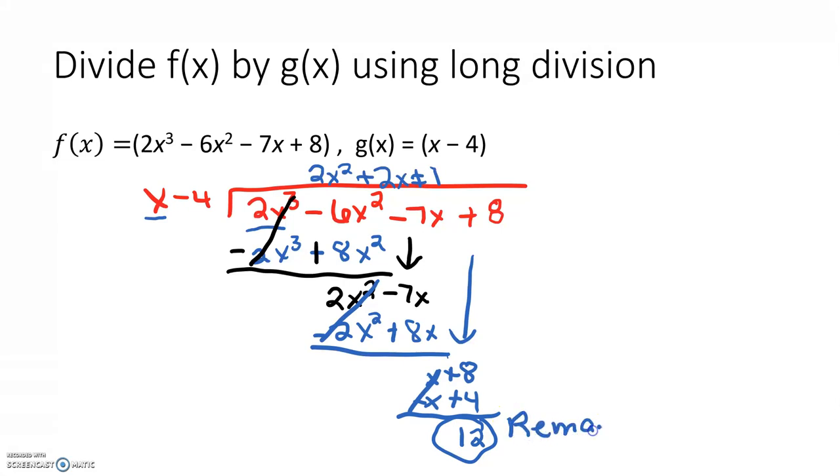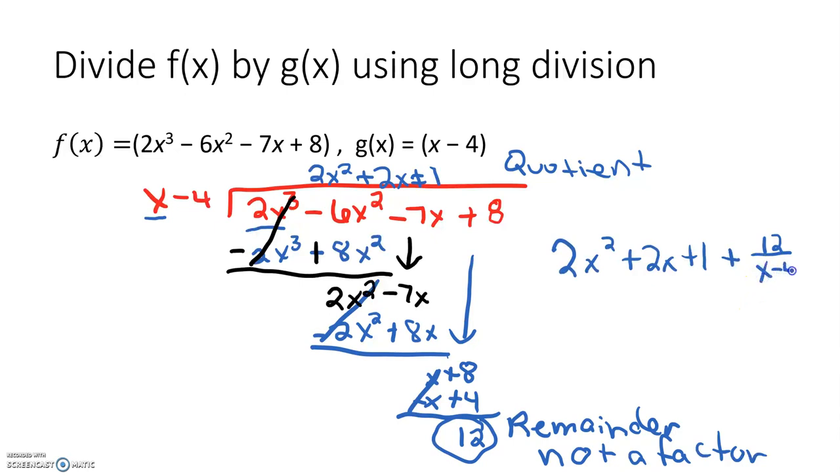Because the remainder does not equal 0, then it is not a factor. This means that X minus 4 is not a factor of 2X cubed minus 6X squared minus 7X plus 8. The answer will be the quotient and the remainder. So we have 2X squared plus 2X plus 1 plus – and we always write the remainder over the divisor. So it is 12 over X minus 4.